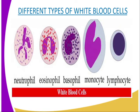Lymphocytes have a round nucleus and are produced in the thymus and lymph glands. They protect the body by producing antibodies. The antibodies are produced when microorganisms invade the body. The antibodies produced are of different types and they protect the body in the following ways.